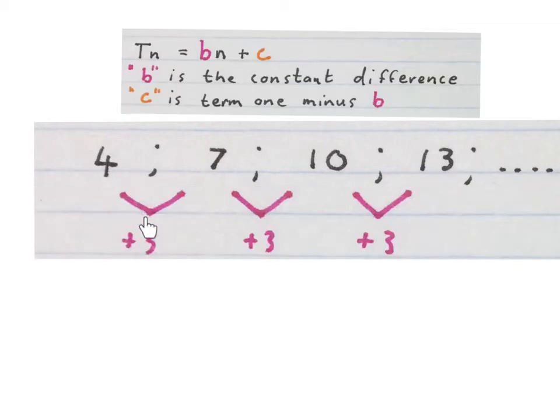We can see that 4 plus 3 gives us 7, plus 3 gives us 10, plus 3 gives us 13, so we know it is a linear pattern.